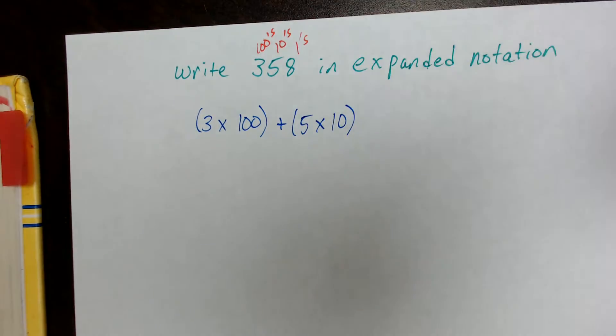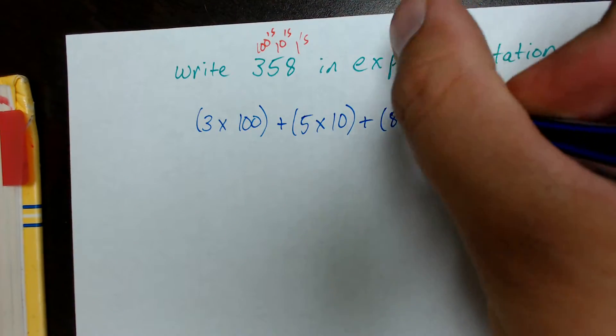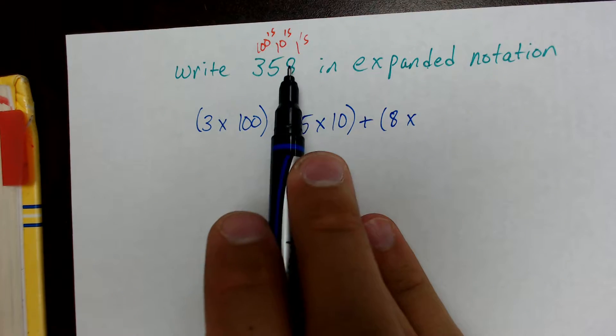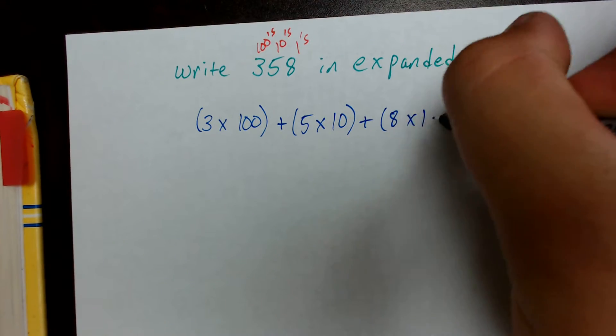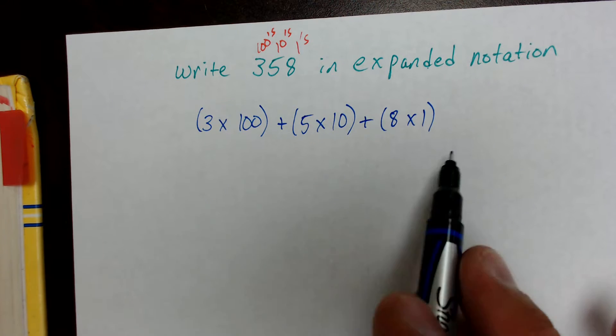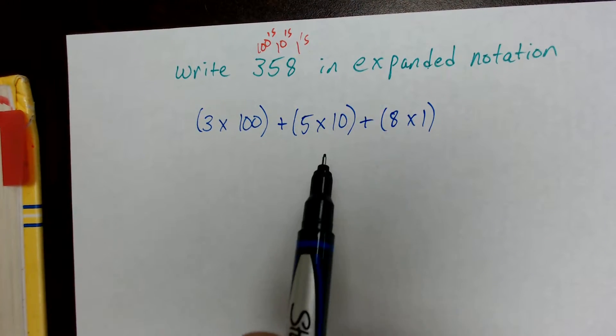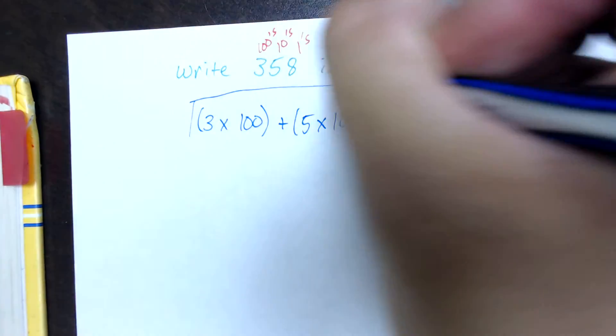And then the last one is the 1's place value. So we put our plus sign again, then we put our 8 and then 8 times the place value of 1. 8 times 1. And this is the number 358 in expanded notation. Exact same number, different notation. So this would be our final answer for this problem.